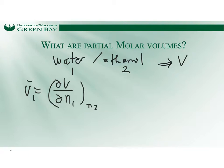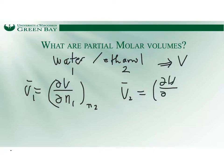By the same definition, the partial molar volume of ethanol is V2-bar, which equals the change of the volume per change of the ethanol moles when holding the number of moles of water constant.